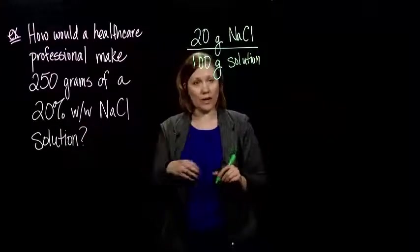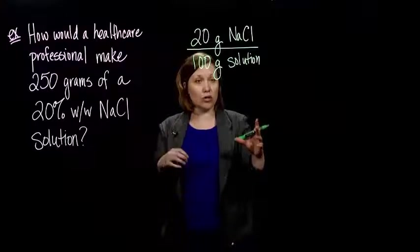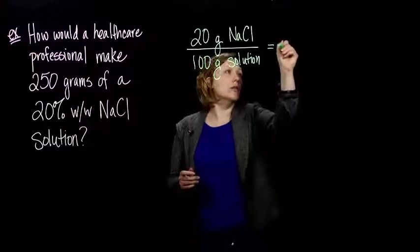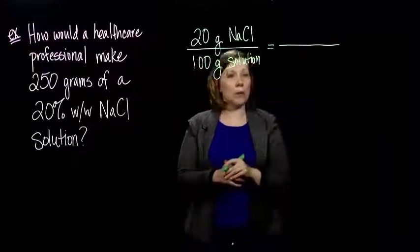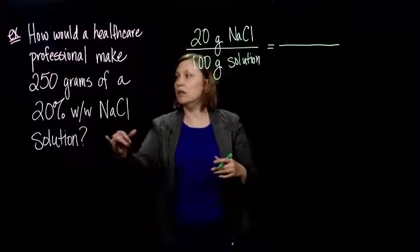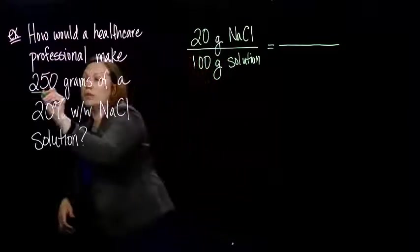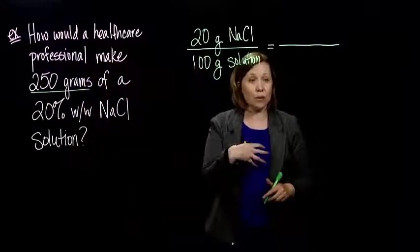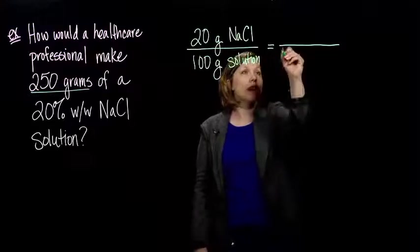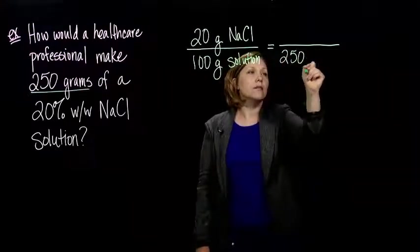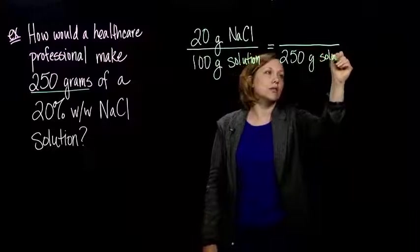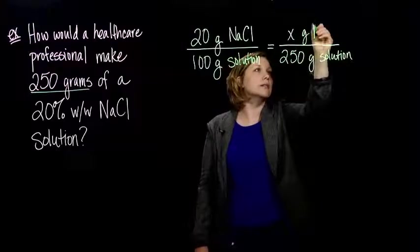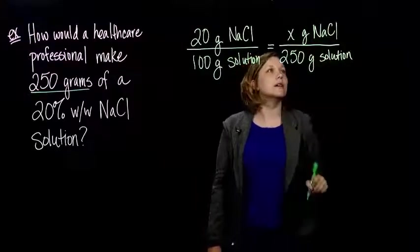20 per 100 of the grams in our solution is going to be sodium chloride. We want that to be in proportion to what we want for our new total weight. We don't want our total weight to be 100 grams, but we do want to keep the same proportion. So we'll have 250 grams solution. And what goes on top? Well, we don't know.